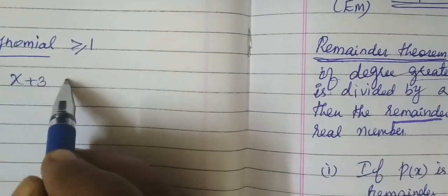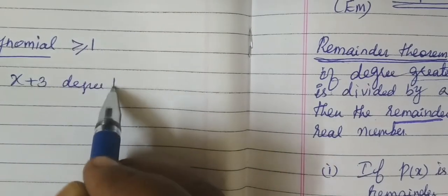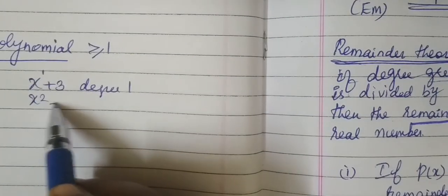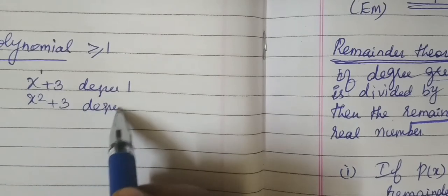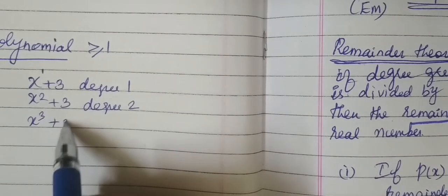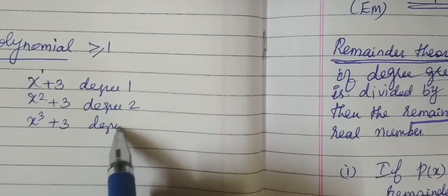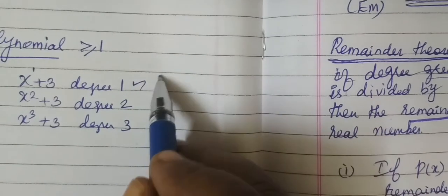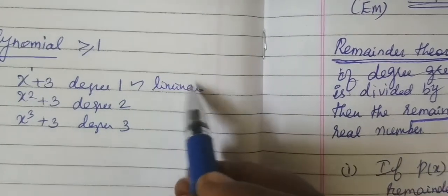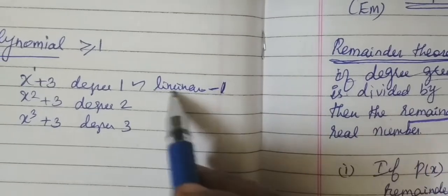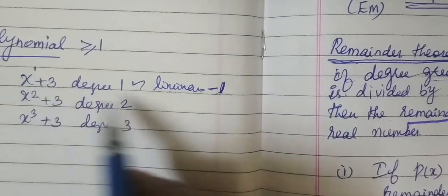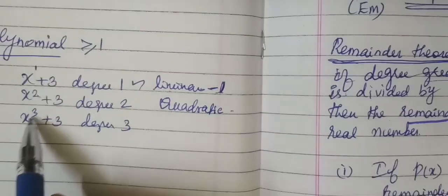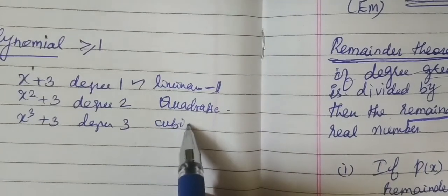For example, suppose x plus 3 - the degree is 1. Then x squared plus 3 - the degree is 2. Then x cubed plus 3 - the degree is 3. So in a polynomial, if the power is 1 we call it a linear polynomial. If degree is 2 we use a quadratic polynomial. If degree is 3 we use a cubic polynomial.